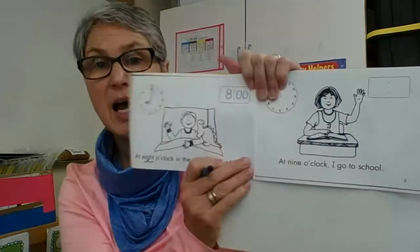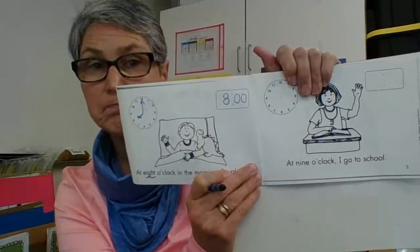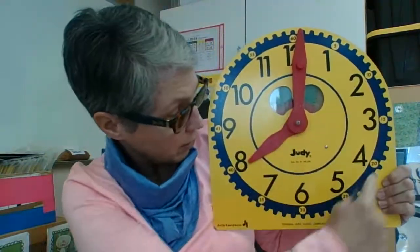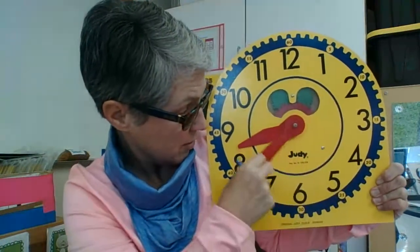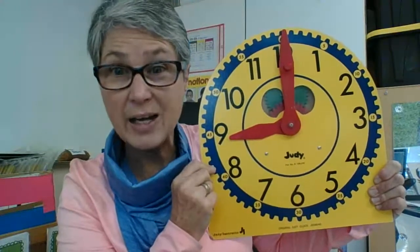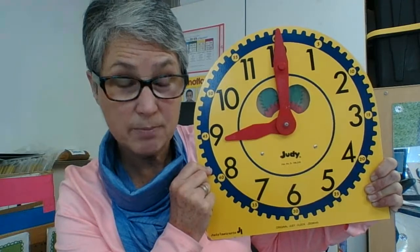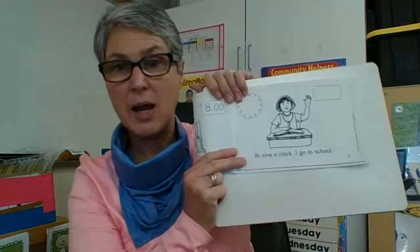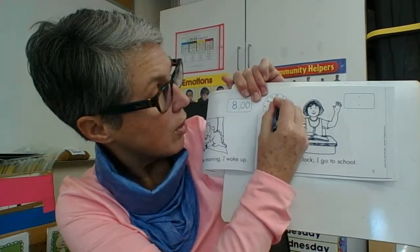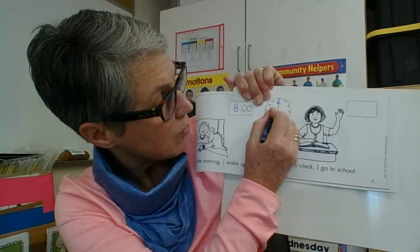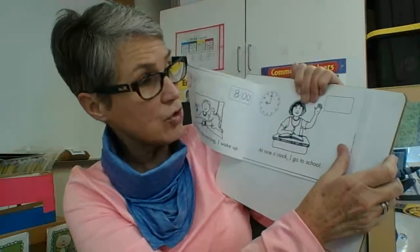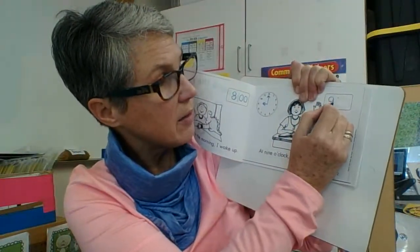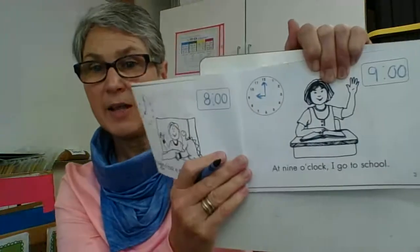The next page says: at 9 o'clock, I go to school. I wonder what 9 o'clock is going to look like on our clock. We know that we need to go around the clock one whole time to make 60 minutes, to make one hour. Now we have 9 o'clock. I need my long minute hand up to the 12 to make the o'clock, and I need my small hour hand pointing to the 9. Then I need to put the digital time in the box — 9:00. At 9 o'clock, I go to school.